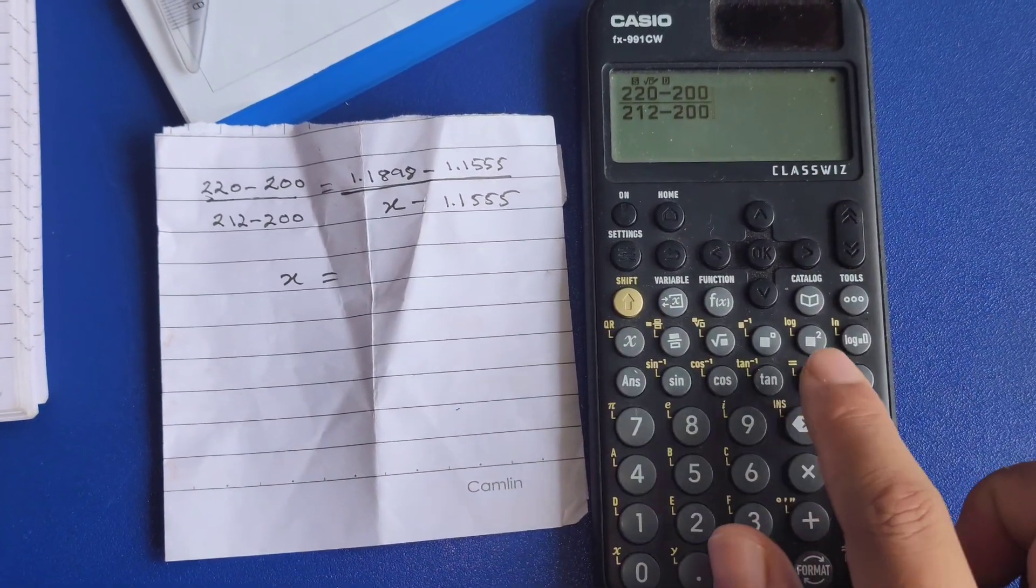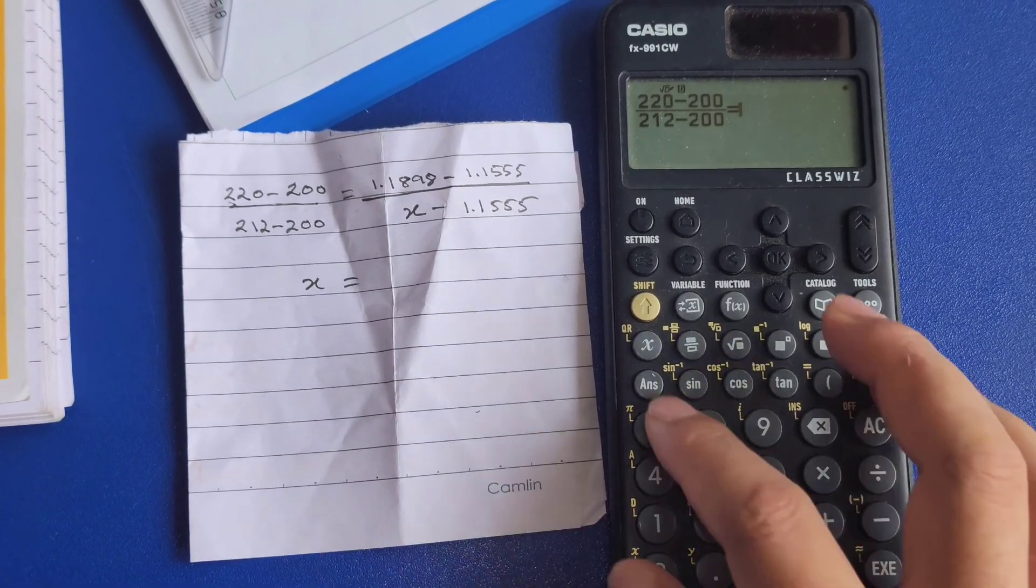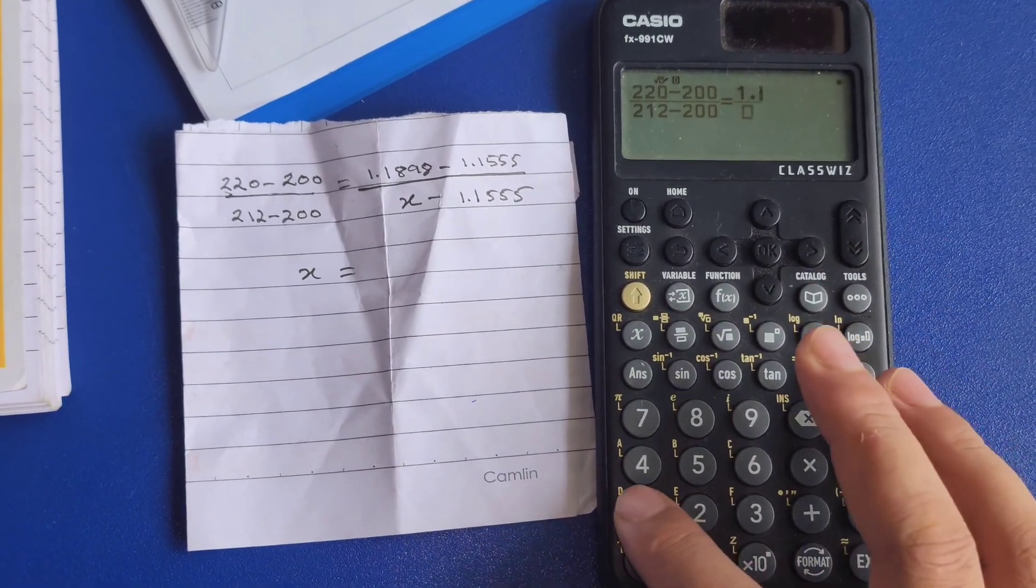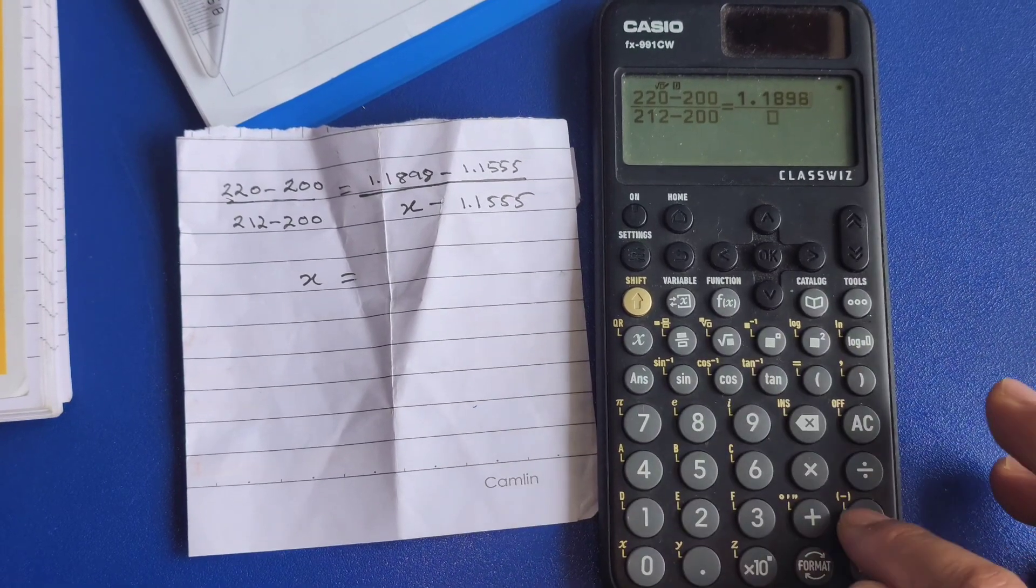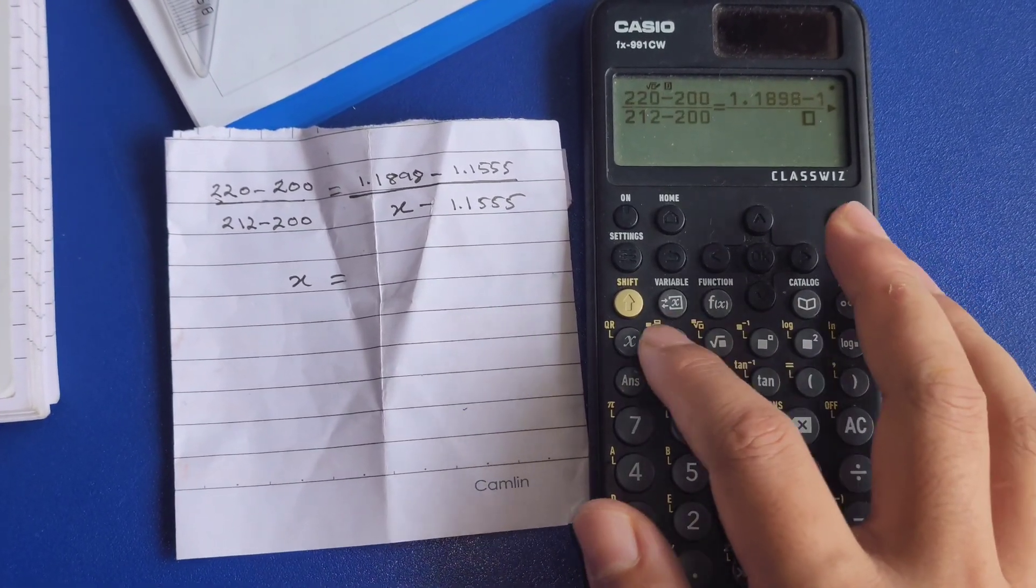Now to put the equal sign you have to press the shift and then equal button over there. You look at the equal sign, that's how we do it. It's not as simple as it used to be in the older calculator.